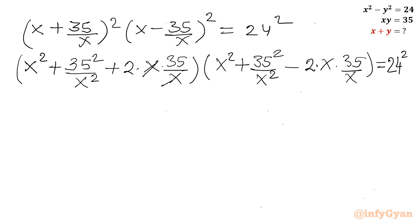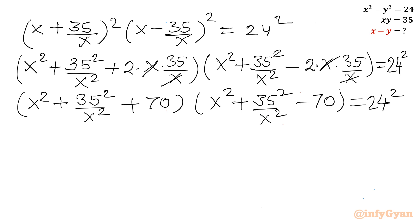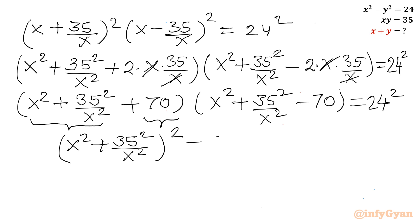After cancelling x terms, I apply the difference of two squares identity again, treating the repeated bracket as a single term. This gives: x squared plus 35 squared over x squared, whole squared, minus 70 squared, equals 24 squared.